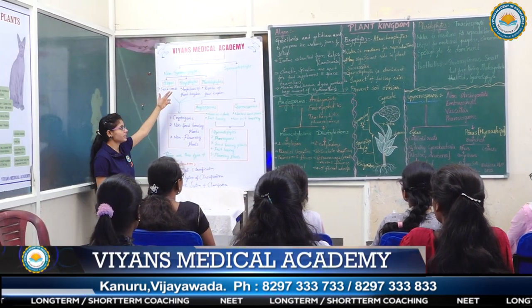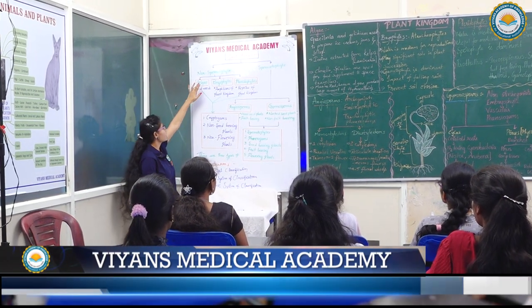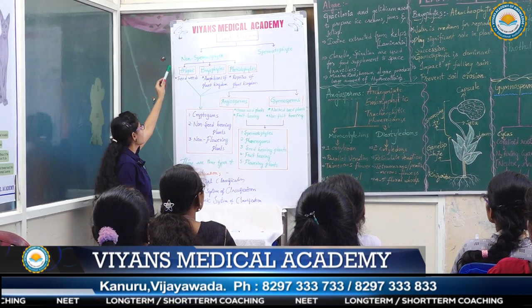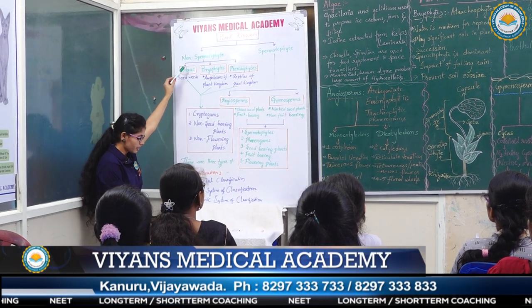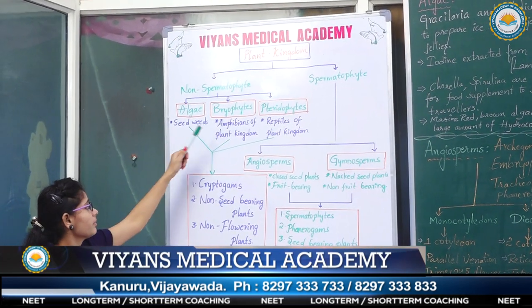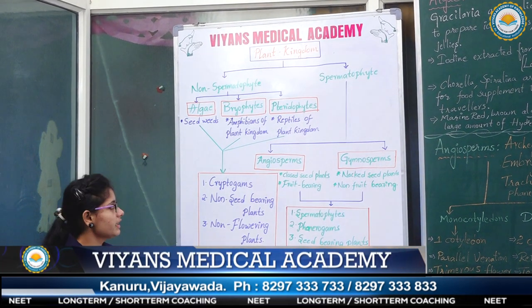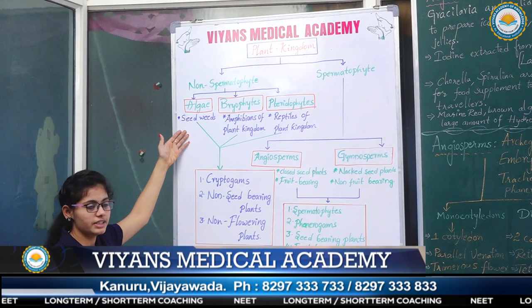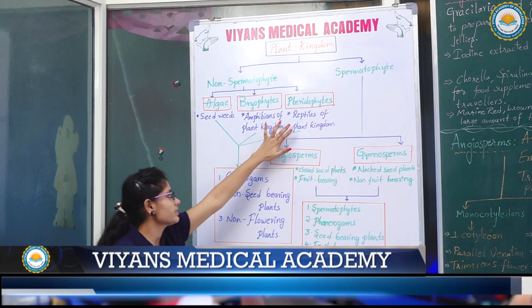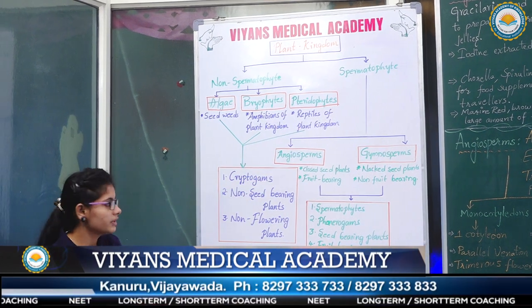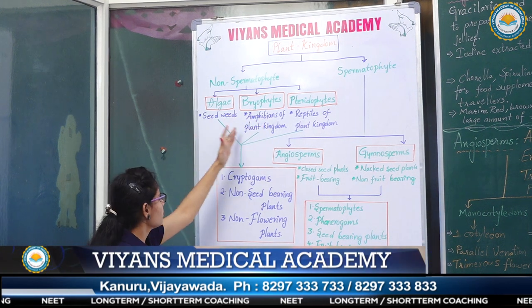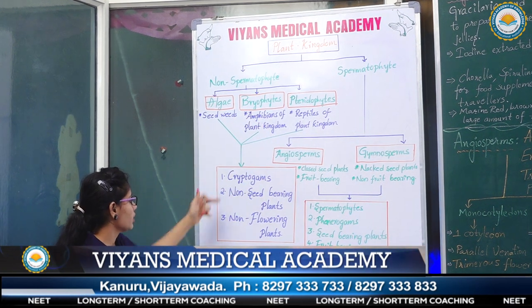The Plant Kingdom is mainly divided into two divisions: non-spermatophyte and spermatophyte. Non-spermatophyte is again divided into three divisions: algae, bryophytes, and pterophytes. Here algae is known as seaweeds, bryophytes are called as amphibians of Plant Kingdom, and pterophytes are called as reptiles of Plant Kingdom. Algae, bryophytes, and pterophytes are called as cryptogams.